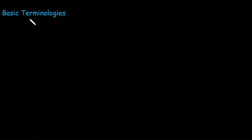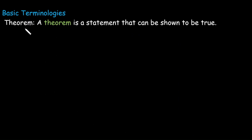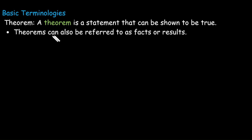The first basic terminology is theorem. A theorem is a statement that can be shown to be true — it is a true statement. Generally a theorem can also be referred to as a fact or result.